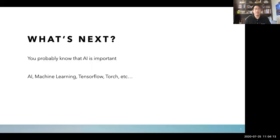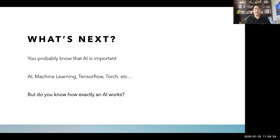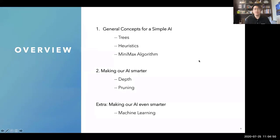Making mental work easier is mostly done by using AIs. You've probably heard that AIs are pretty important. For those with more interest in this field, you might have heard about AI, machine learning, and programs called TensorFlow and PyTorch. But the general population doesn't really know how exactly an AI works. In this lecture I'll teach you how a simple AI works, using chess as an example. I'll cover general concepts, trees, heuristics, the minimax algorithm, depth and pruning, and if we have time, a bit of machine learning.